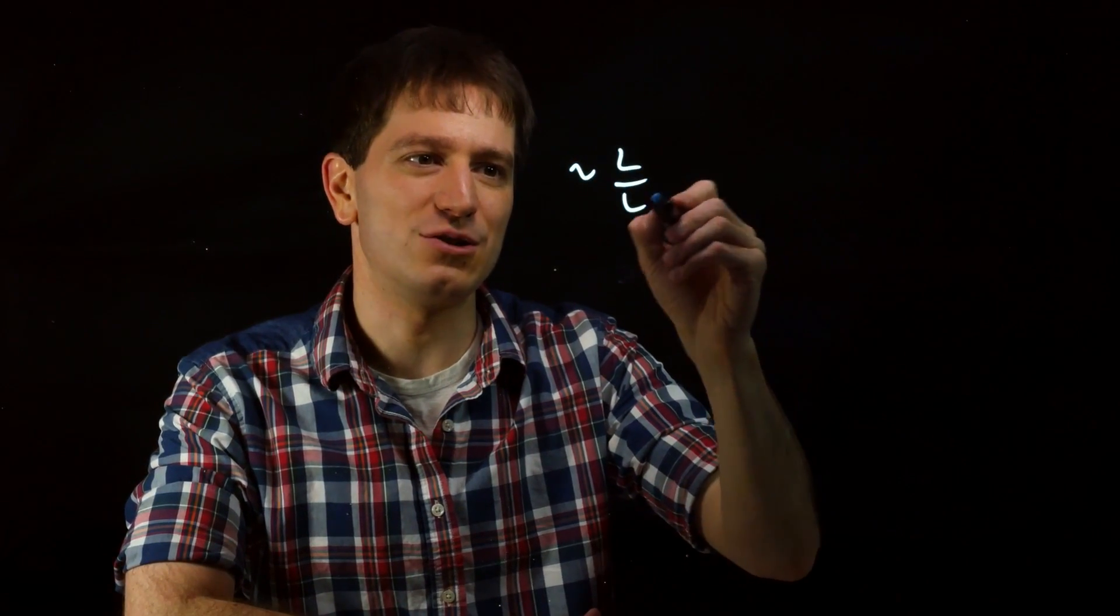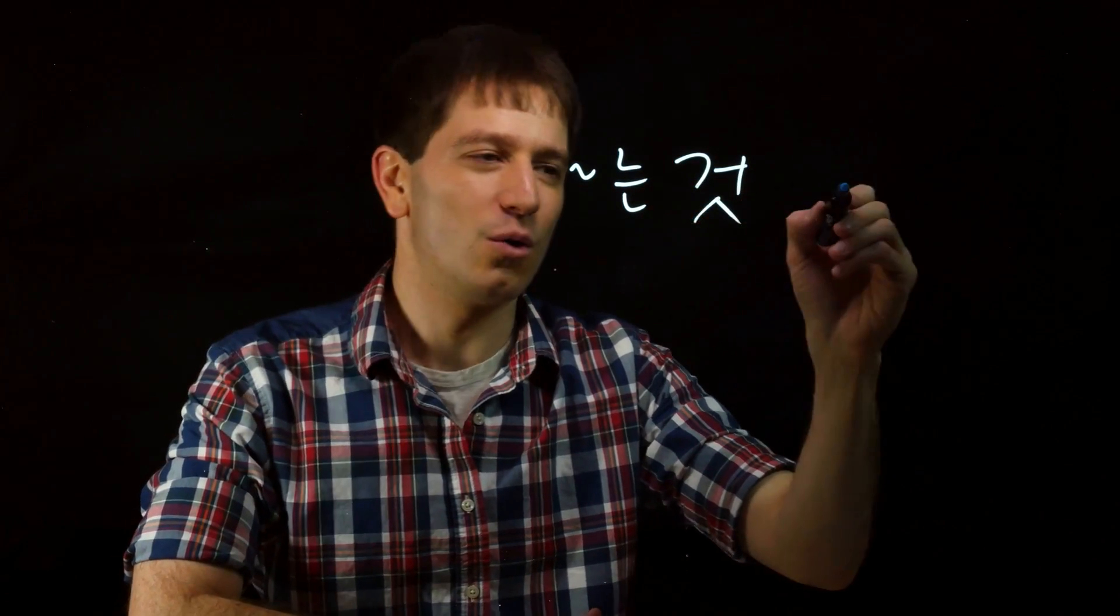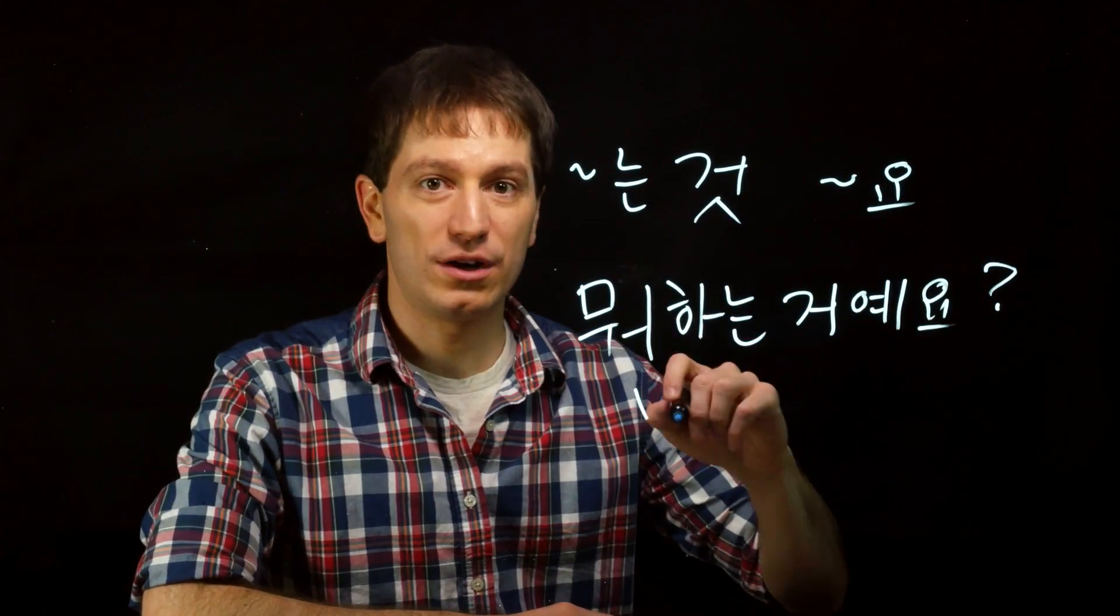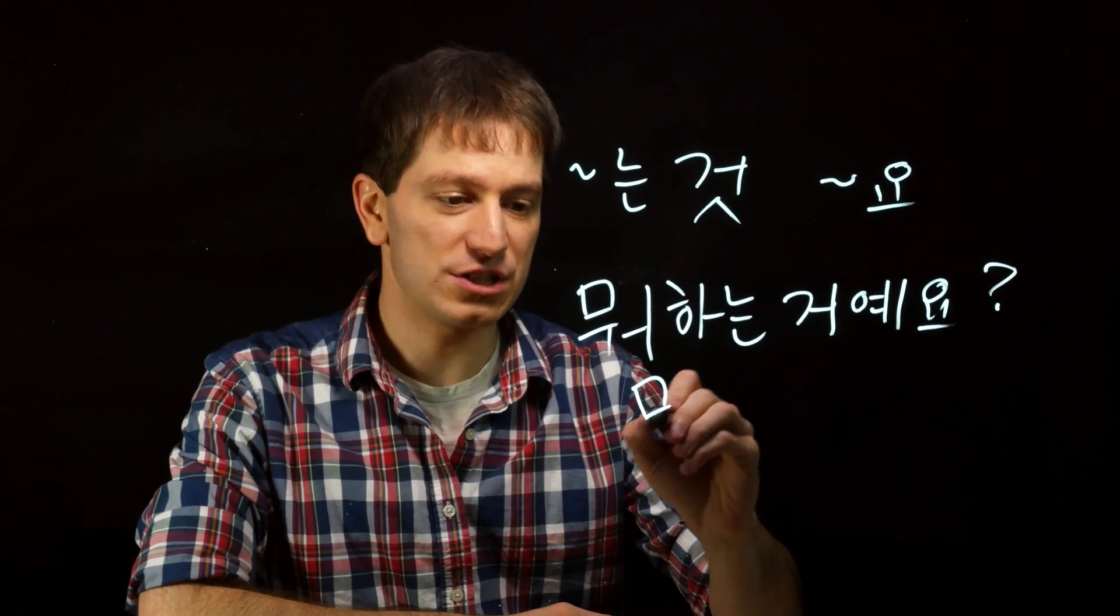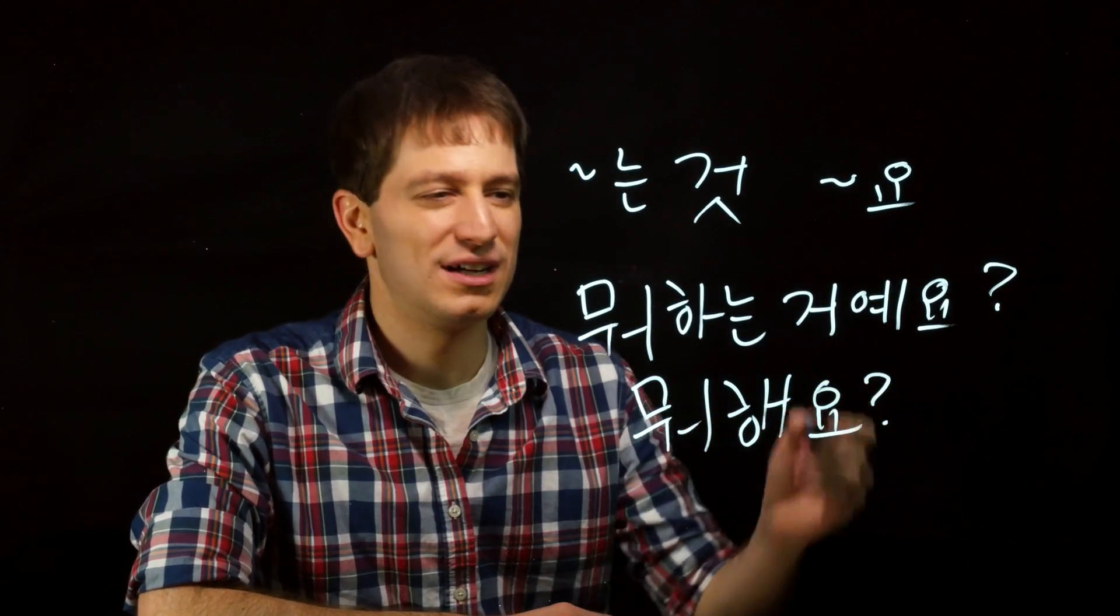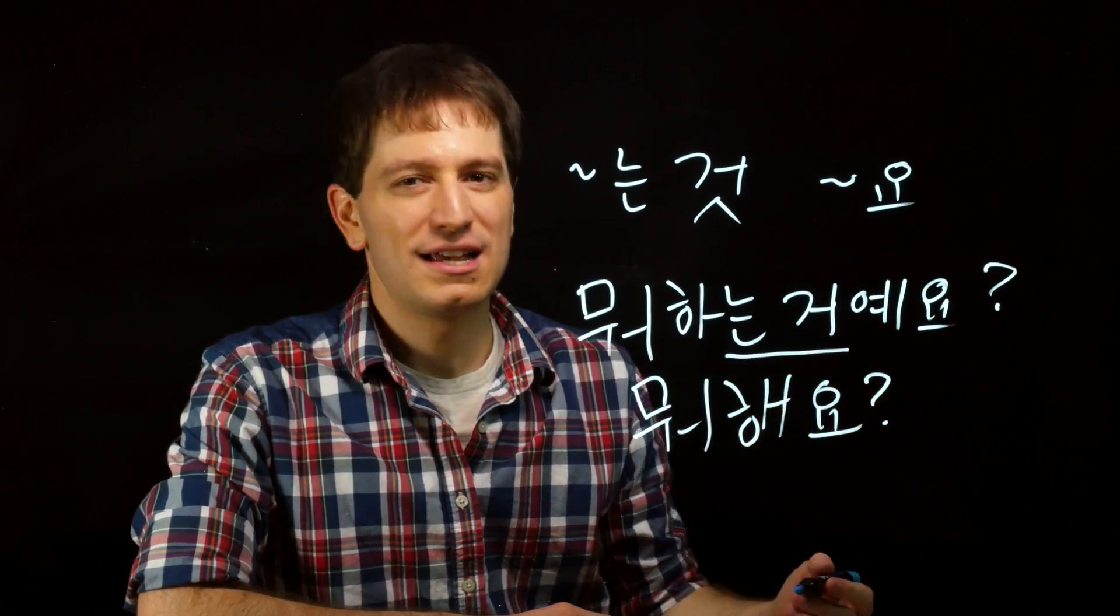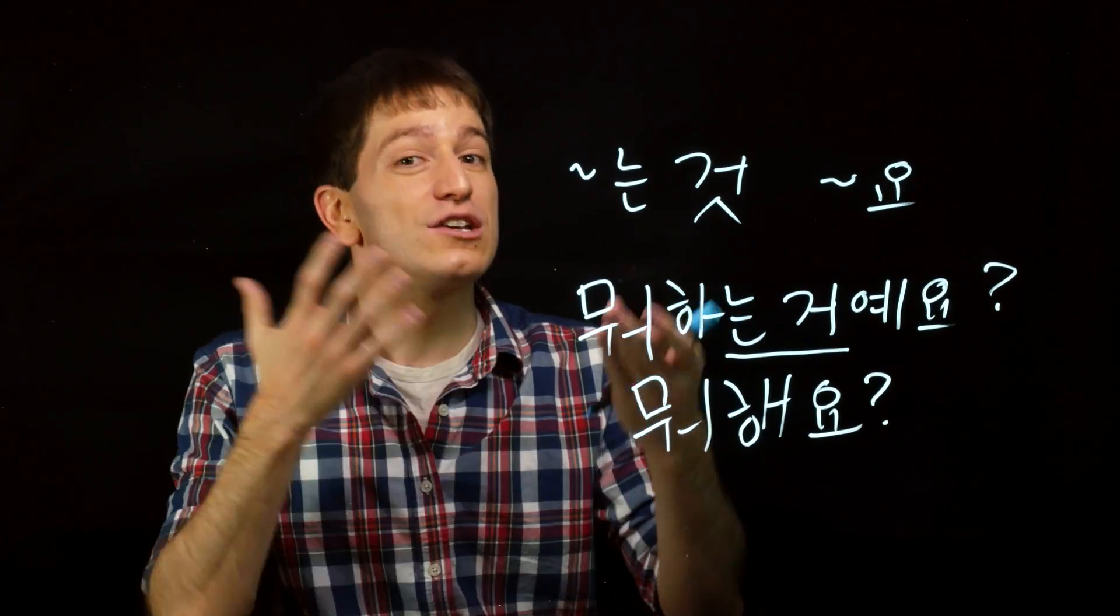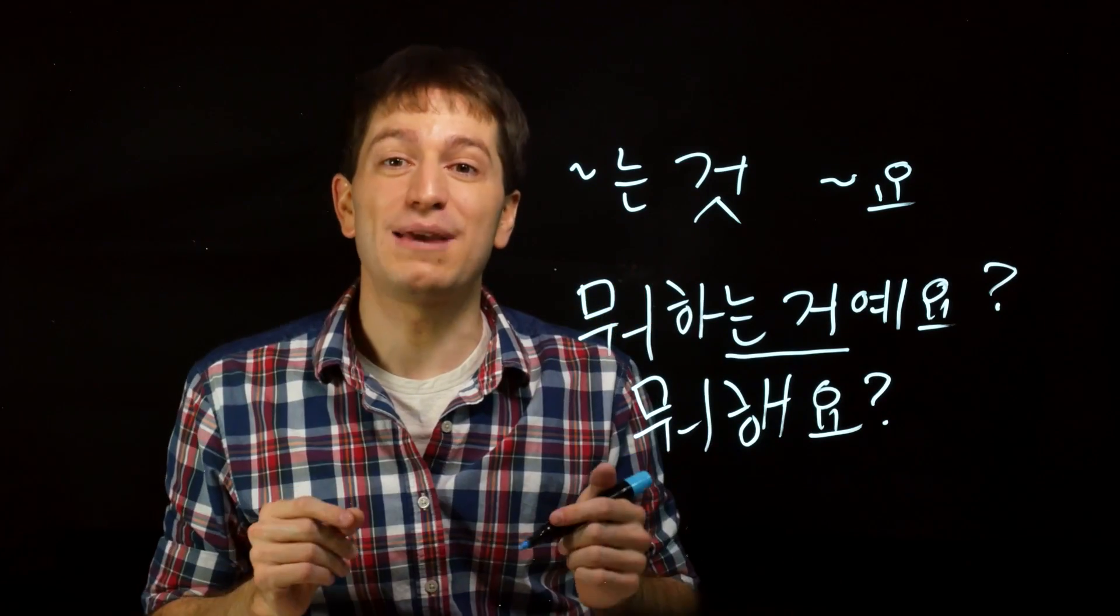One more thing is that when you're asking a question, there is another slight difference between using this 는 거 form or just using the regular 요 form. So you can ask someone 뭐 하는 거요? What are you doing? Or you can just ask them 뭐 해요? Of these two, the 는 거 form sounds slightly more aggressive. It doesn't necessarily mean one is rude and one is polite, but just something to pay attention to.